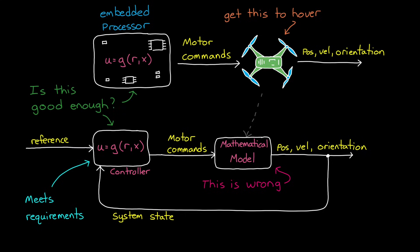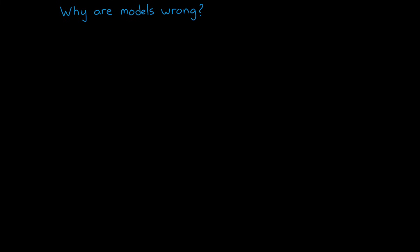I mean, our controller could probably handle some differences in the real system, right? Well, before we address that, let's look at why the model is wrong in the first place. And there's lots of reasons.